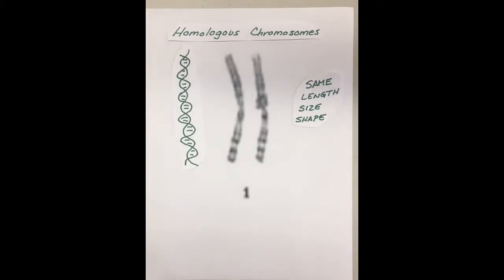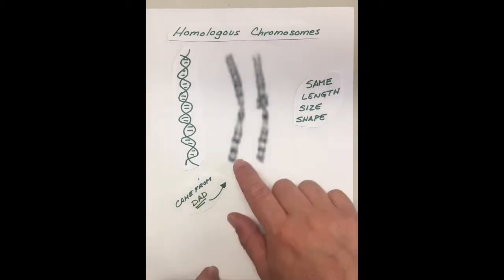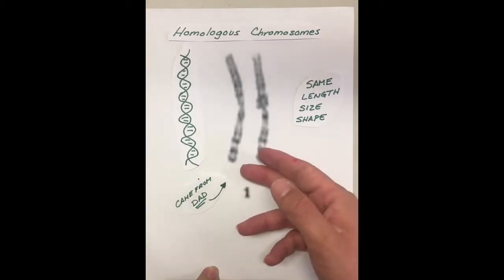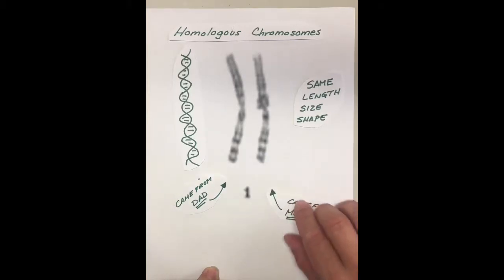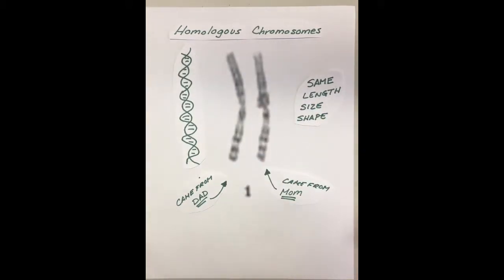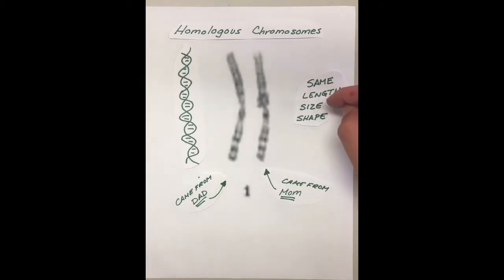How do we get chromosomes that are the same size and shape? One chromosome that's the same size and shape as the other came from dad. So when I was conceived, my dad gave me one of these chromosomes and my mom gave me the other. The same is true for you — your dad gave you one chromosome and your mom gave you another, both the same size and shape.